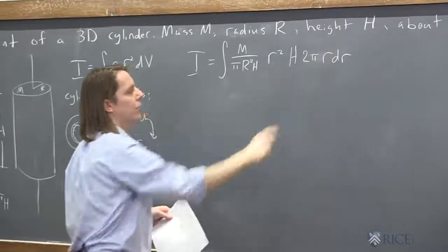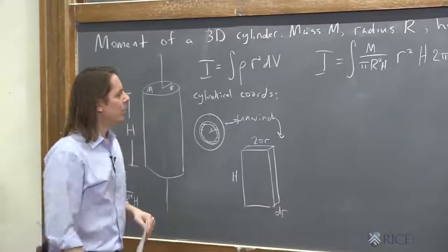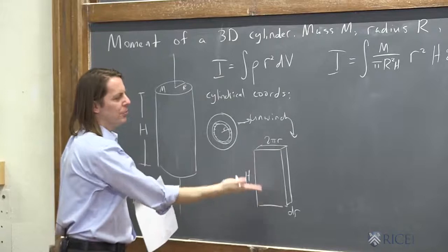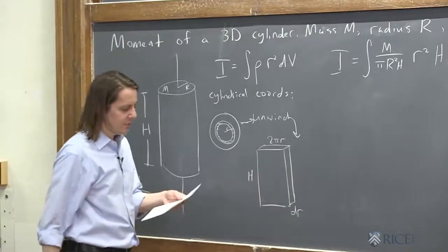And right there is where the theta integral would have been if we'd have done it. We're also assuming that it's uniform throughout, right? So as we move up and down in H, it's uniform. So there's no need to think about doing an integral down the height like that.